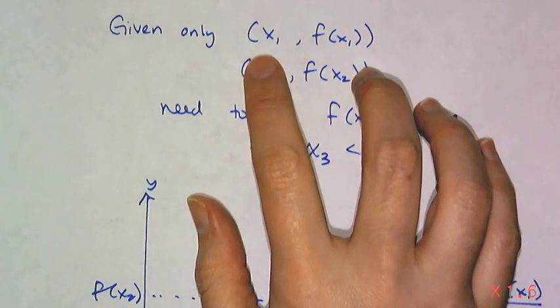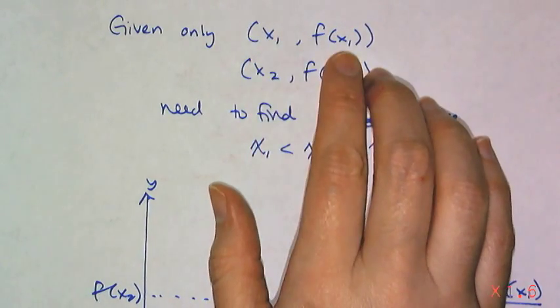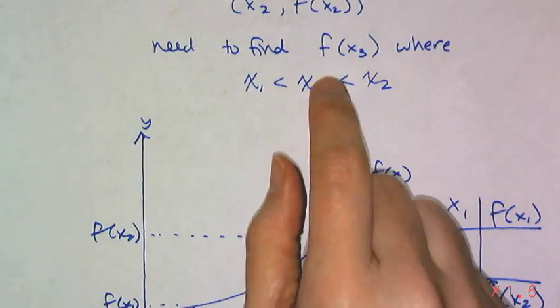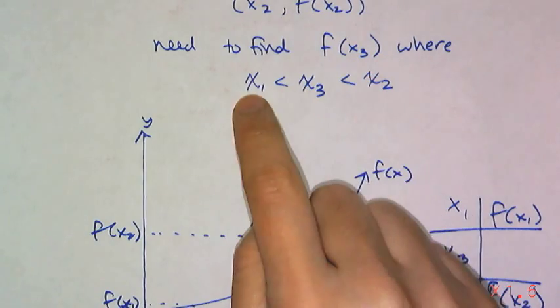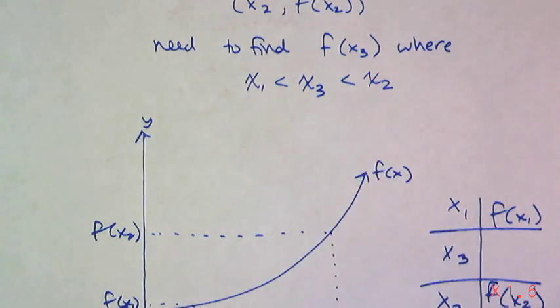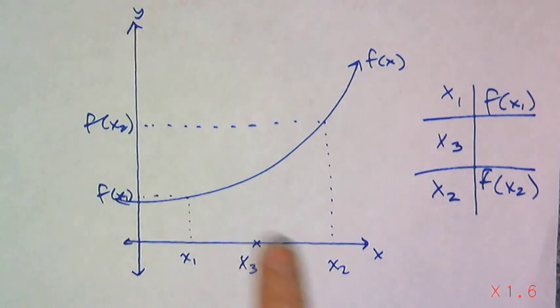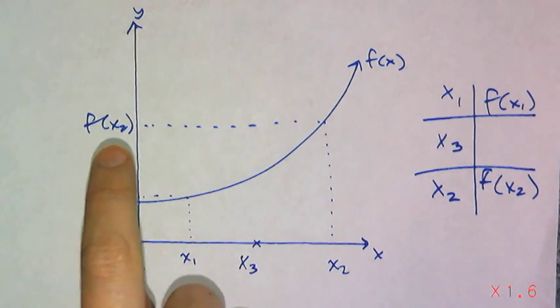You're given only two points: x1, f(x1) and x2, f(x2) on some function. And you need to find f(x3) where x3 is between x1 and x2. So you have some graph, and you have the x1 value and the f(x1) value and the x2 and the f(x2).